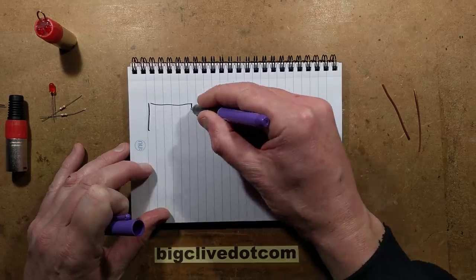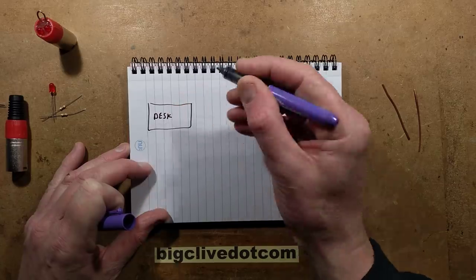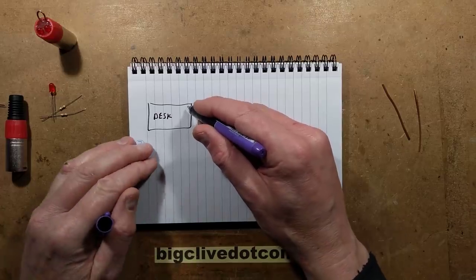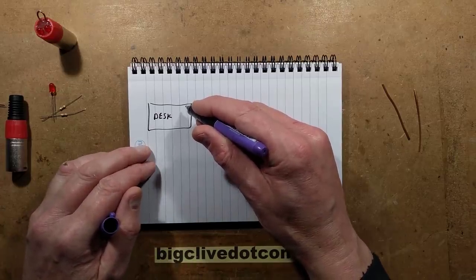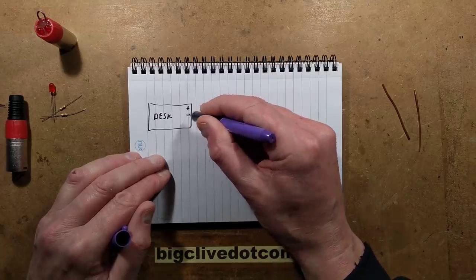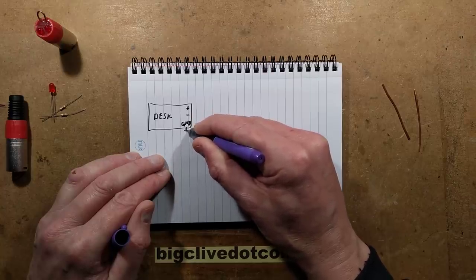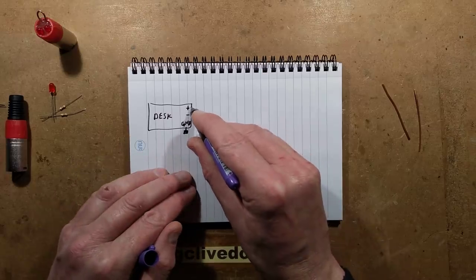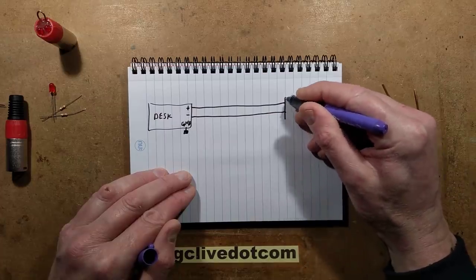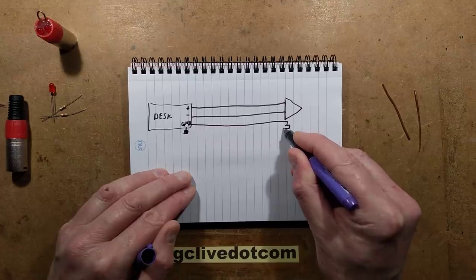Let's draw this out. So imagine that this is the lighting desk. Normally it would have between one and no upper limit of universes, each universe being 512 channels. So this has a data cable going to the receiver, so we've got plus data, we've got minus data, and we've got ground, which is also used for the screen and it's just general reference to the electronics ground in the circuitry. So we've got the two data lines go across, and they go to the receiver.